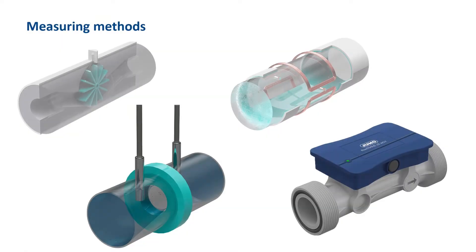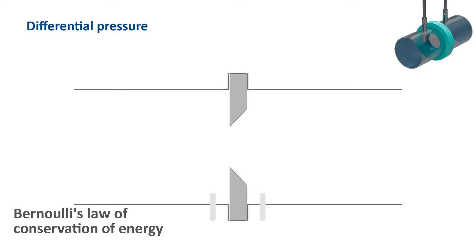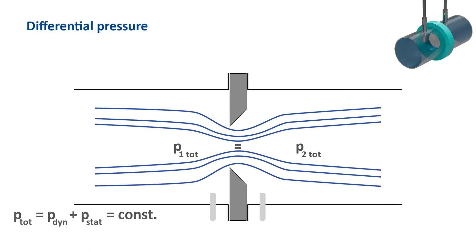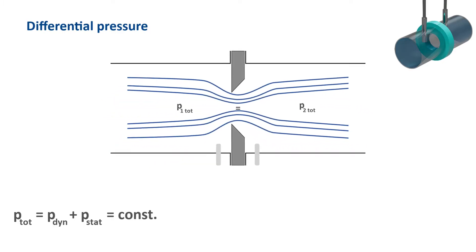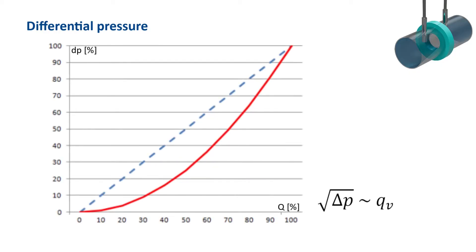In the differential pressure method, the flow velocity is calculated via the differential pressure. The total pressure is composed of the dynamic pressure and the static pressure. According to Bernoulli's law of conservation of energy, this total pressure is constant within a closed system. By tapering the pipe cross-section at one point, the flow velocity is increased there. As a result, the dynamic pressure component increases and, since the total pressure is constant, the static pressure component decreases. The static pressure is measured immediately before and after the cross-section taper, and the pressure difference is then a measure of the flow. The flow rate has a quadratic proportional relationship to the measured differential pressure, which can then be root extracted in the pressure transmitter.